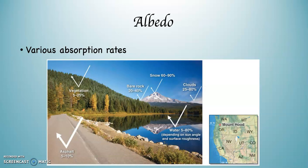Bare rock has 20 to 40% being reflected. With snow, 60 to 90% is being reflected — and of course it's white. Clouds, on the top of a cloud, what color is it? It's white. So clouds reflect 25 to 80%. And then water is a weird thing — it depends on the angle and the roughness of the surface. Is it a glass-like lake, or is there wind beating it up? It can be anywhere from almost all the energy being absorbed to almost none of the energy being absorbed.